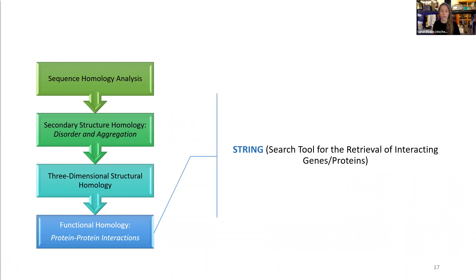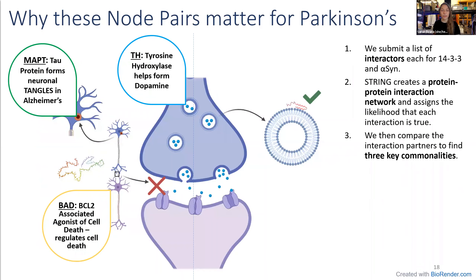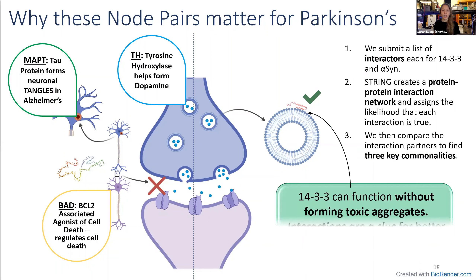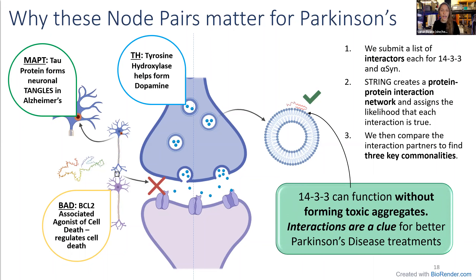We then look at the functional homology, thinking about how this structure connects with the protein's functions and interactions. We use STRING, the search tool for the retrieval of interacting genes and proteins, to carry out this analysis. We submit a list of interactors for each protein to the database; STRING creates two separate networks and the interactions are ranked. Comparing the two lists, our analysis of same-pair protein-protein interactions reveals three commonalities — all critical to neuronal health: Tyrosine hydroxylase (TH), which catalyzes the synthesis of dopamine; Tau protein (MAPT), known to form neuronal tangles in Alzheimer's disease; and BCL2-associated agonist of cell death (BAD), which regulates cell death. Notably, 14-3-3 can function without forming toxic aggregates, providing a clue through these interactions to finding better treatments for Parkinson's disease.